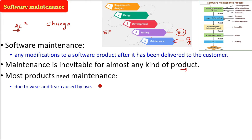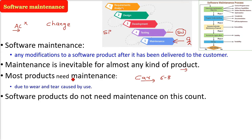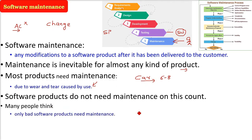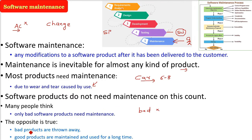Most products need maintenance because they have wear and tear, like a car. Every 6 to 8 months you have to get it serviced — mainly the tires and machinery. But software products don't have this kind of problem; they do not need maintenance on that account. Many people think that if bad software is created, you need a lot of maintenance. But this is absolutely wrong — the opposite is true. Bad product? You just throw it away. But good products, the best products, they are maintained. They have longevity and are used for a long time.